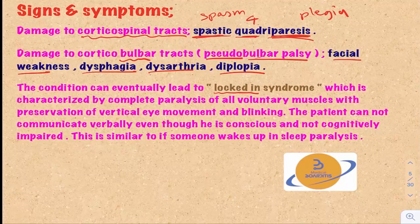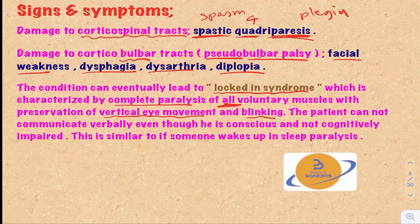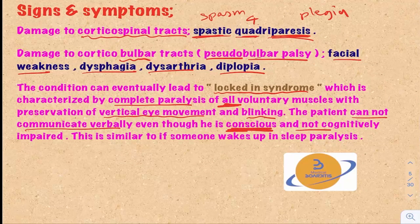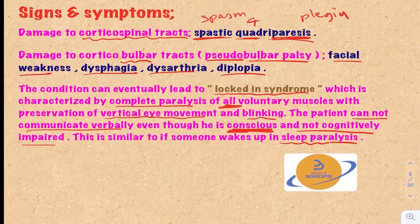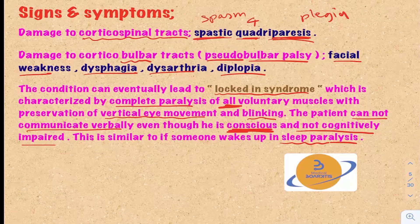Eventually, the condition will result in what's called locked-in syndrome, which is characterized by the complete paralysis of all voluntary muscles with the preservation of only vertical eye movement and blinking. So everything in the body is paralyzed except looking up and down and blinking. The patient cannot communicate verbally even though they're conscious and not cognitively impaired. You can read about a patient who wrote a book by just blinking their eye. These patients are completely conscious of their surroundings — they know everything around them, but unfortunately they cannot talk or communicate, except through blinking of their eyes.